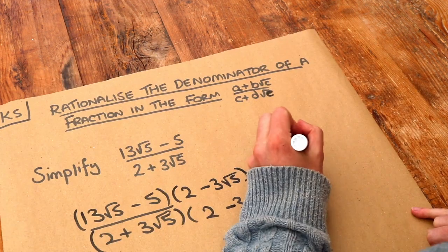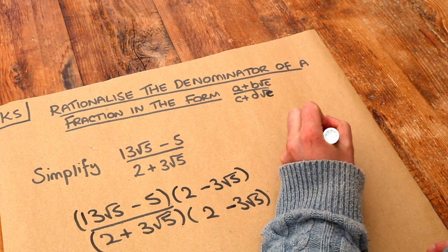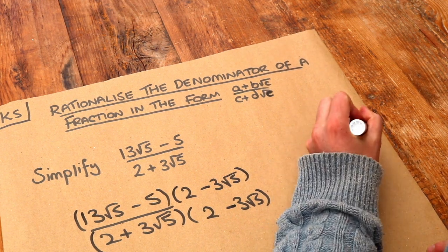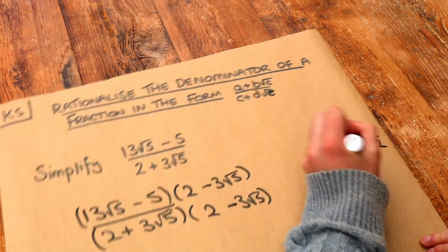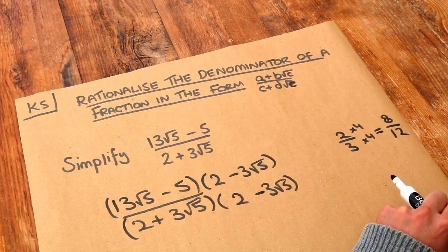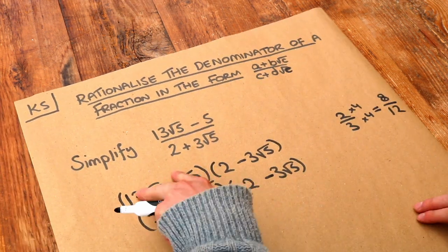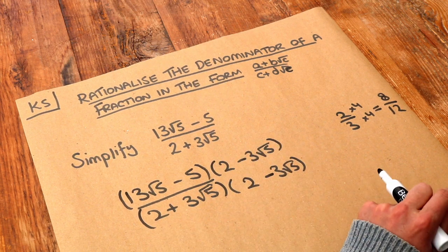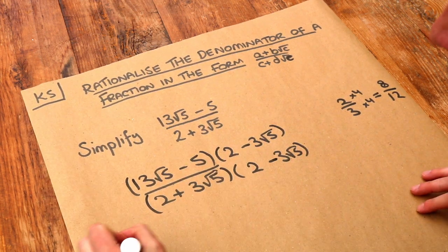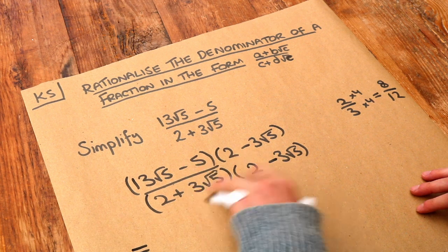Just a bit like if I had say 2 thirds and I multiply top and bottom by 4, that gives you 8 over 12, which is the same. 8 over 12 is the same as 2 over 3. So we haven't changed the value of this fraction by multiplying top and bottom by 2 minus 3 root 5.